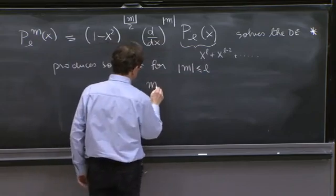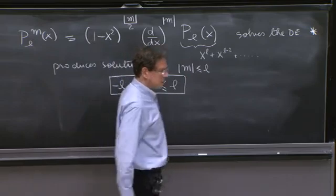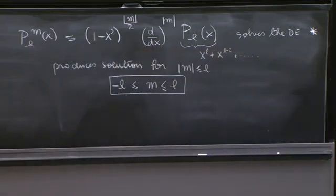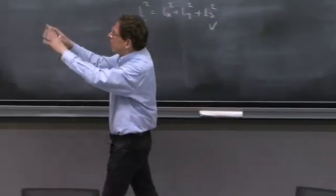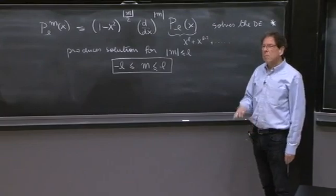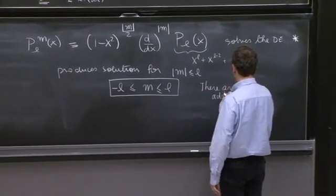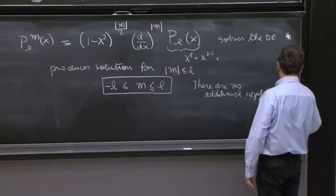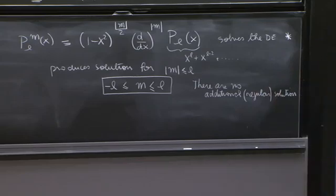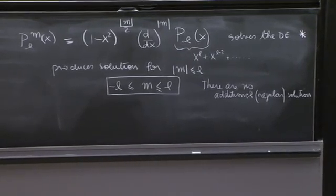You can take at most M equal L derivatives. If you take more than L derivatives, you get 0. And there's no great honor in finding 0 solutions of this equation. These are no solutions. So this produces solutions for absolute value of M less or equal to L. And therefore, M in between L and minus L. But that's not all that happens. There's a little more that takes mathematicians or some skill to do, is to show that there are no more solutions. You might seem like you were very clever, and you found some solutions. But it's a theorem that there are no more solutions. No additional regular solutions. I mean, solutions that don't diverge.